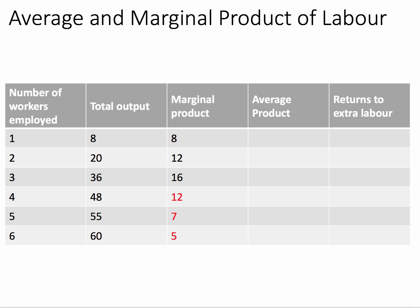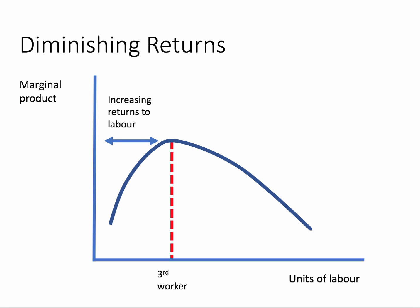That is diminishing returns, where marginal product has fallen. Sketching this, the first, second, and third workers add successively more to output, so marginal product is rising, peaking at 16. But then the fourth worker only adds 12, the fifth just 7, the sixth just 5. So marginal product falls due to diminishing returns to labour, mainly because we've now got more labour relative to capital, so the amount of capital per worker is falling.